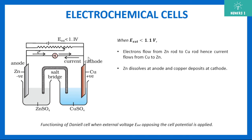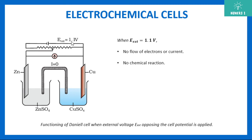When the external voltage equals 1.1 volts, there is no potential difference between copper and zinc. No potential difference means no flow of electrons, which means current is zero. So when the external potential equals the cell potential, there is no flow of electrons or current, and no chemical reaction is taking place.